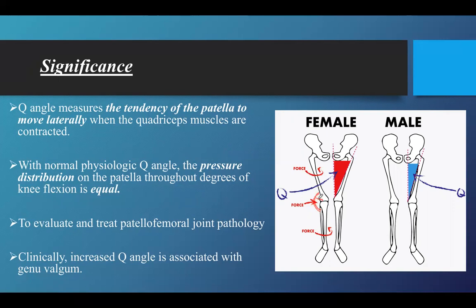The Q-angle represents the tendency of the patella to move laterally because of the pull of the quadriceps muscle. We measure it because when there is an abnormal Q-angle, patellofemoral joint pathologies can be diagnosed. This is why we need the Q-angle to remain within the normal ranges mentioned in the slides.